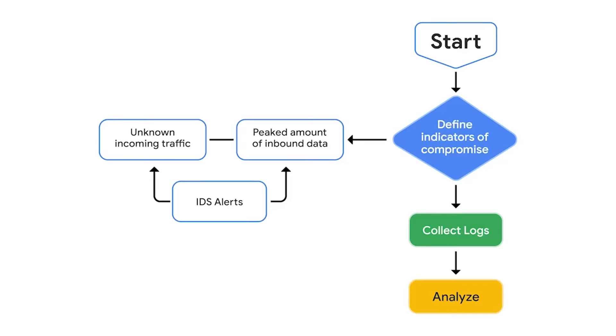Playbooks outline the steps necessary in response to attacks like ransomware, data breach, malware, or DDoS. Here's an example of a playbook that uses a flowchart diagram with the steps to take during the detection of a DDoS attack. This depicts the process for detecting a DDoS and begins with determining the indicators of compromise, like unknown incoming traffic. Once the indicators of compromise are determined, the next step is to collect the logs and finally analyze the evidence. There are three different types of playbooks: non-automated, automated, or semi-automated.